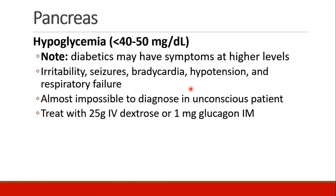If a patient is found to be hypoglycemic, they can be treated with 25 grams of IV dextrose, or 1 milligram of glucagon given intramuscularly. Awake patients could be treated with oral glucose-containing foods or beverages.